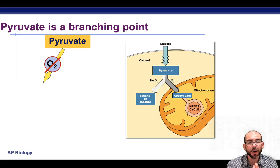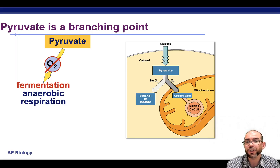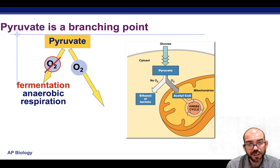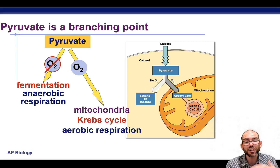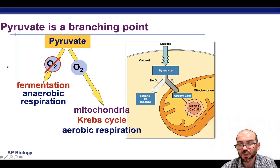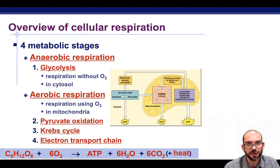Pyruvate is the key branching point on what happens next. If there's no oxygen available to the cell, the cell will take that pyruvate and undergo fermentation, either lactic acid or alcoholic. But if we have a eukaryote with a mitochondria and oxygen is present, the cell can then use the leftover pyruvate and make work of it — going through the steps of the Krebs cycle and electron transport chain in aerobic respiration. Instead of making only two ATP, we can actually make upwards of 40 ATP total using oxygen and further chemical steps.